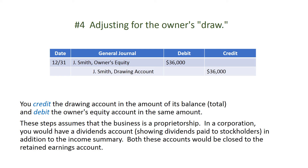These steps assume that the business is a proprietorship. In a corporation, you would have a dividends account showing dividends paid to stockholders in addition to the income summary. Both these accounts would be closed to the retained earnings account.